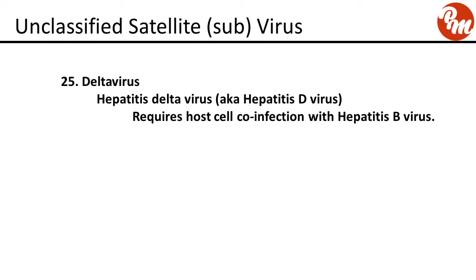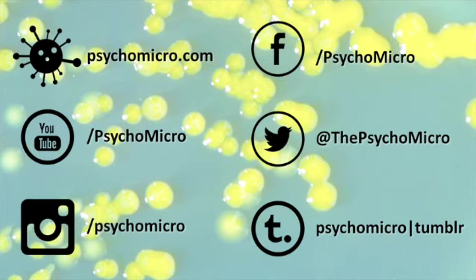Finally, an unclassified satellite subvirus: delta virus includes hepatitis delta virus (hepatitis D virus), which requires the host cell to be co-infected with hepatitis B virus.